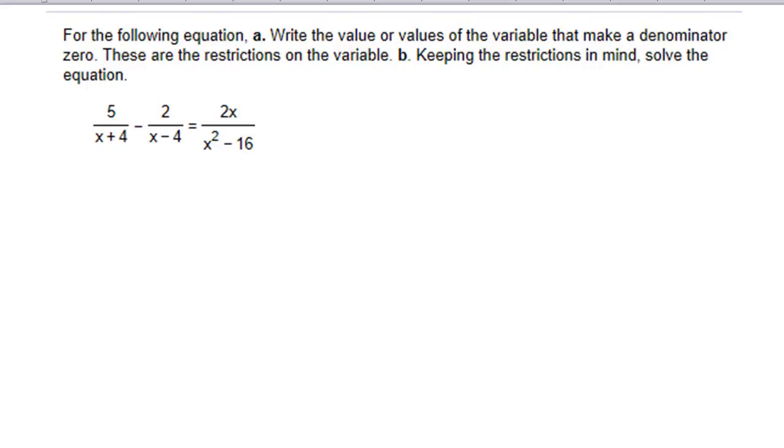The first thing you always do is you factor. So, here we'll have 5 over x plus 4, minus 2 over x minus 4 equals 2x. Getting used to a new tablet here. Over x squared minus 16, of course, factors into the difference of two squares. Here's x plus 4 times x minus 4.